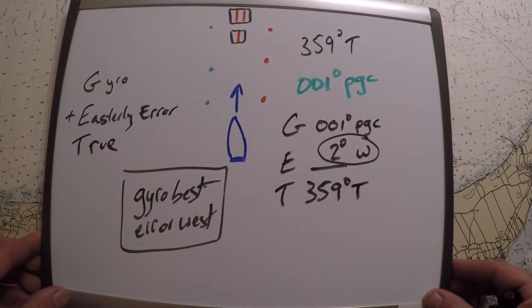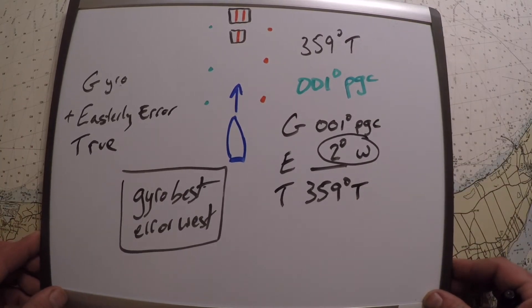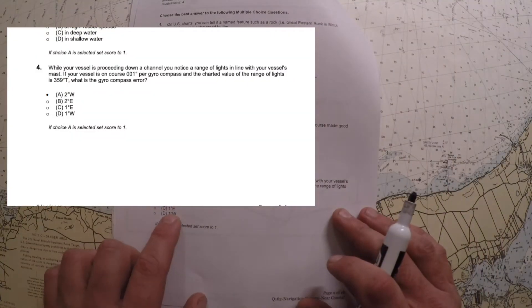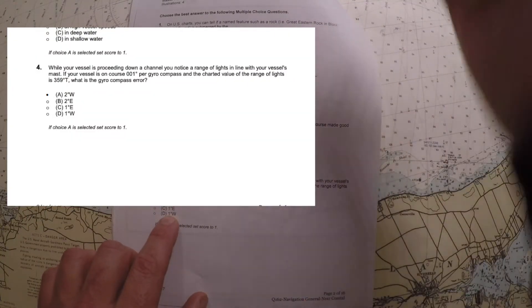Or you could use the gyro plus easterly error equals true memory aid. Either one is great. Looking at the other answers, one degree definitely doesn't make sense in either case, and then it's just a question of east or west.